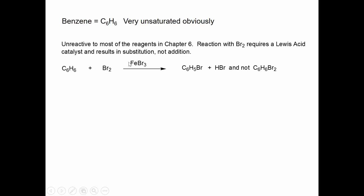You have to actually add a Lewis acid catalyst, a very common one is iron tribromide. But when you do this reaction, you don't get the bromine addition product like you see here. You don't get anything with the formula C6H6Br2, you get a substitution product. You get the product where one of the hydrogens has been replaced by bromine, and you get HBr as a byproduct. So clearly, the reactivity is very different from alkenes.